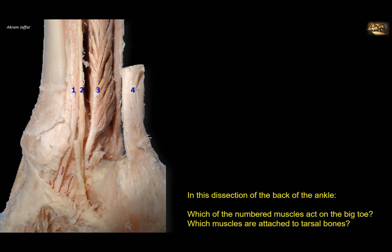In this dissection of the back of the ankle, which of the numbered muscles acts on the big toe, and which muscles are attached to the tarsal bones? You can see the calcaneus and the Achilles tendon — it doesn't act on the big toe but acts on the tarsal bone, the calcaneus. These three muscles pass behind the medial malleolus of the tibia. Remember the mnemonic: Tom, Did, A, Nice, Home — Tom is tibialis posterior, which grooves the tibia.